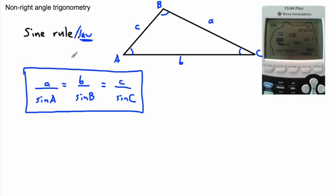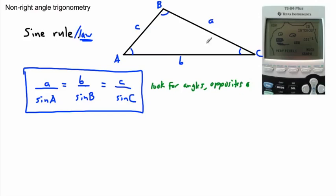What the sine law really helps with is: maybe you're given an angle, a side, and another angle, and you're asked for a missing side. To use it, you have to know an angle and its opposite side. So the key tip is: look at angles and their opposite sides.